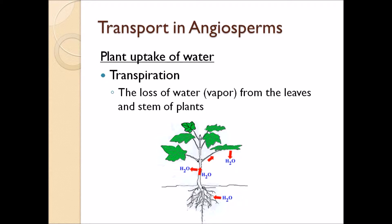We're going to be looking at the whole process of transpiration, starting with water entering from the roots, going up the xylem through the stem, all the way to the leaves, where it exits through the stomata in the bottom of the leaves. If you don't remember where the xylem is in the stem or where the stomata are, double check your drawings of the stem and the leaf.